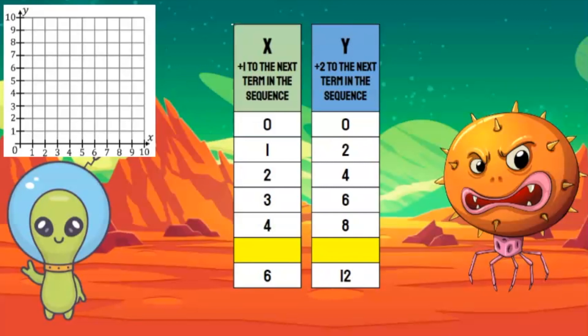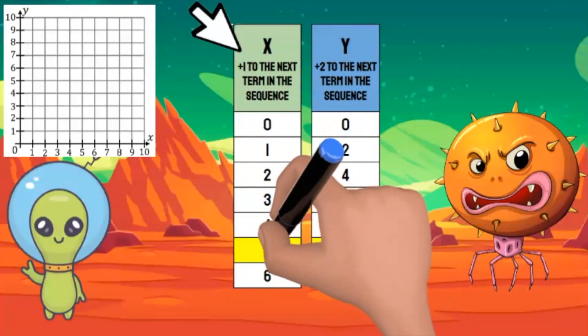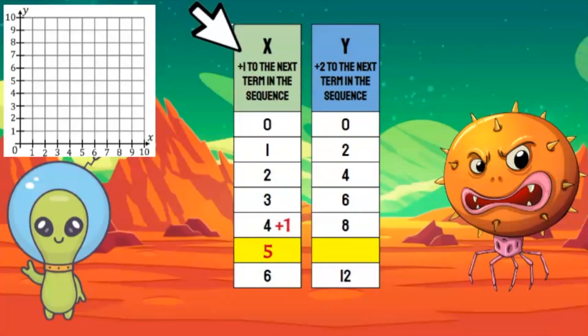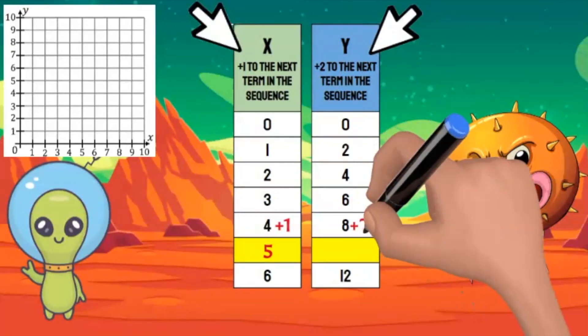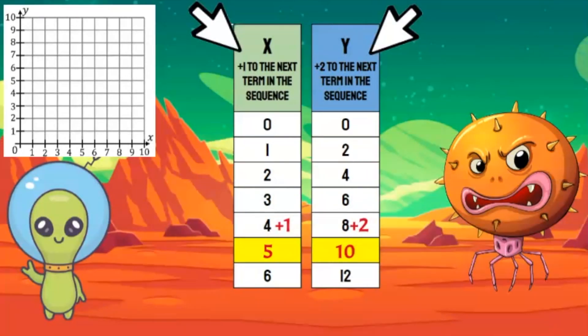I think I've got this. I noticed that the rule for the X coordinates is to add one to the next term in the sequence. Four plus one equals five, my X coordinate will be five. Now the rule for the Y coordinate is to add two to the next term in the sequence. Eight plus two equals ten. The Y coordinate must be ten.